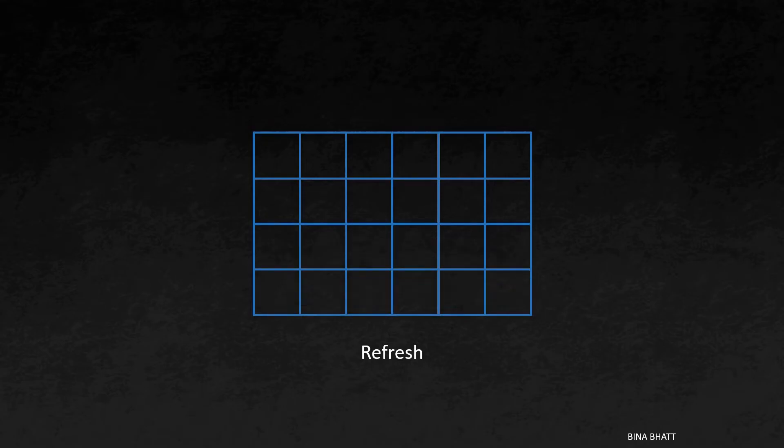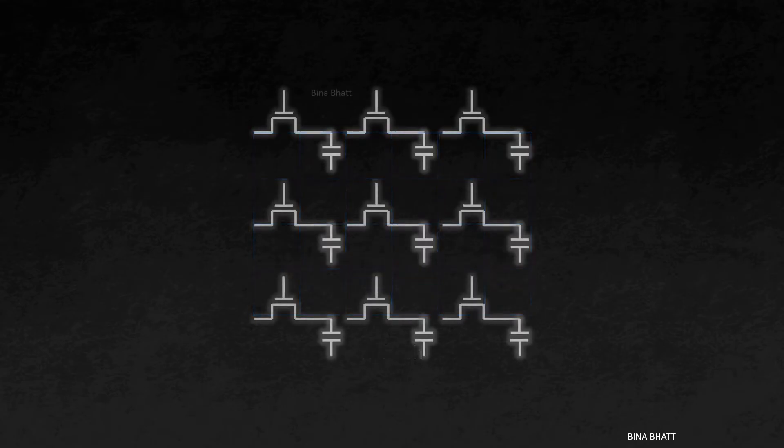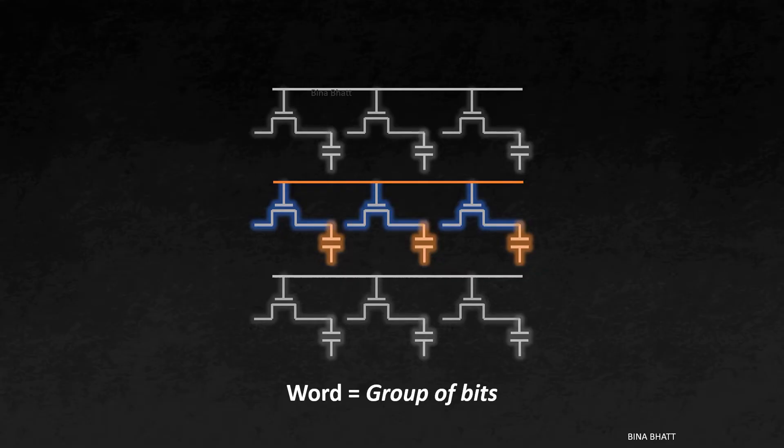Each row of memory cells in DRAM is linked to a unique line. This control line allows us to select all the cells in a row simultaneously. In computing terminology, a word refers to a group of bits, and this line allows us to select a group of bits or cells. That's why it is called a word line.